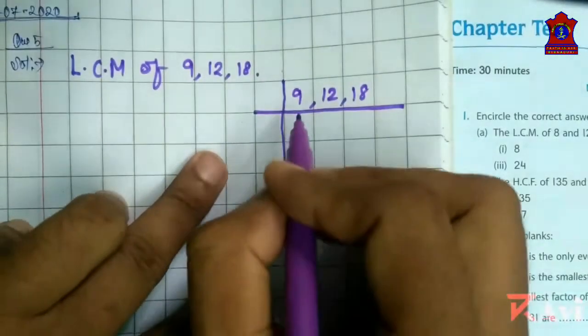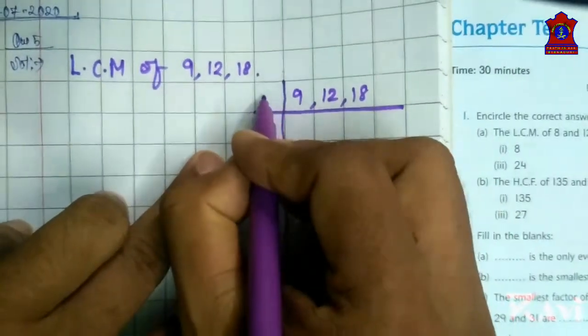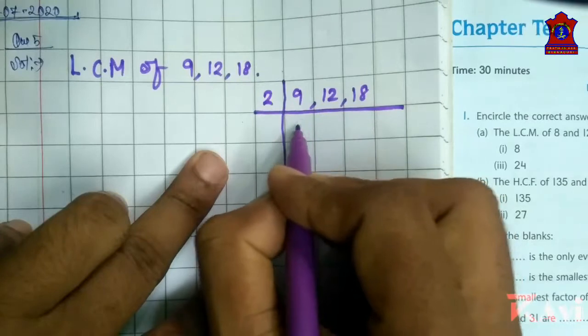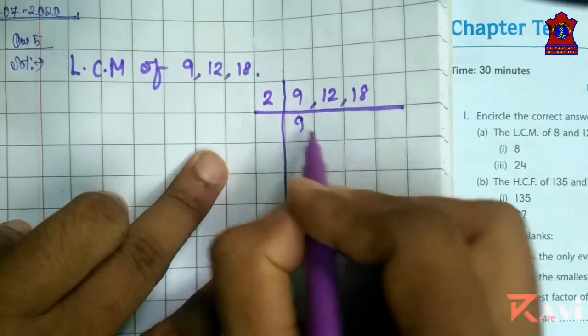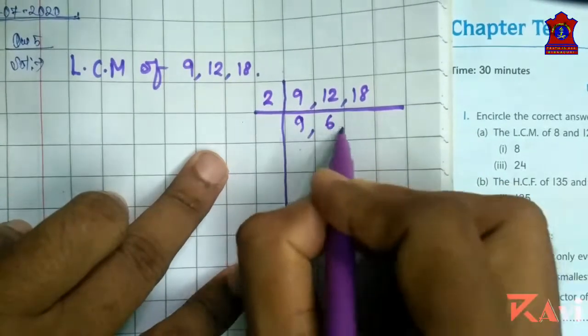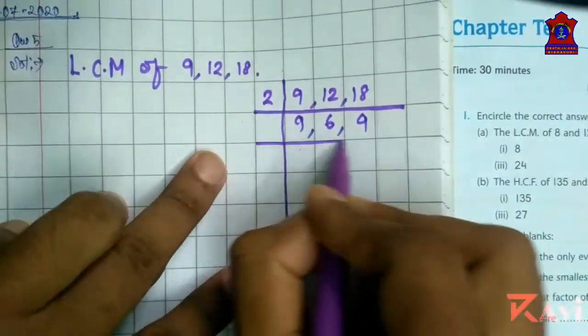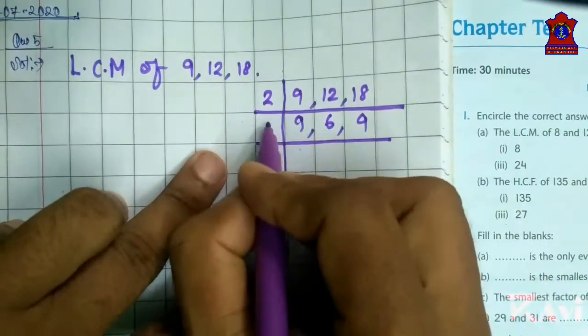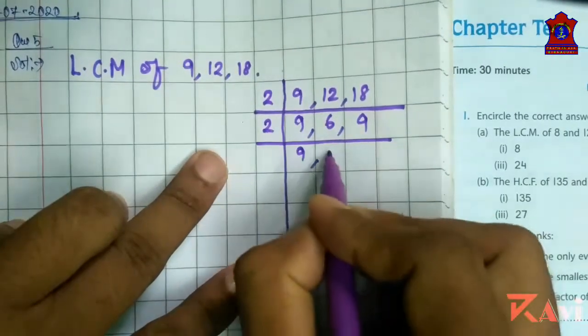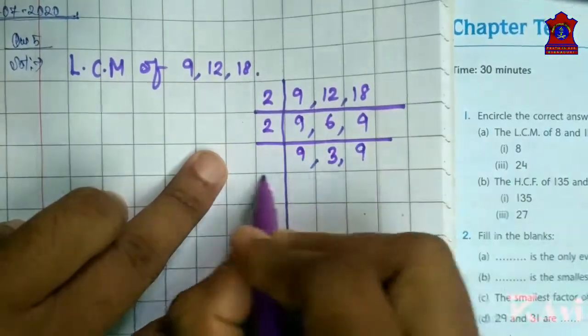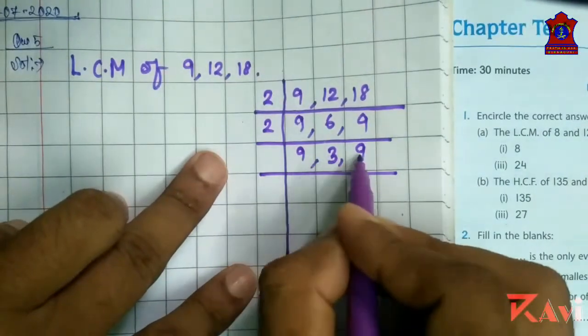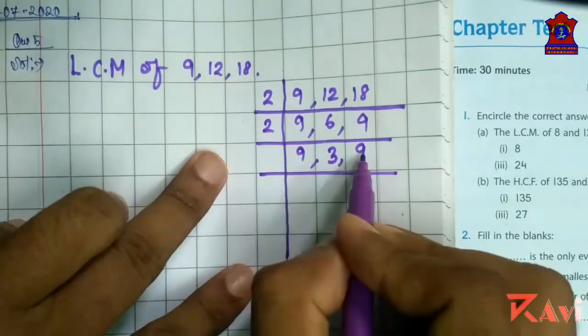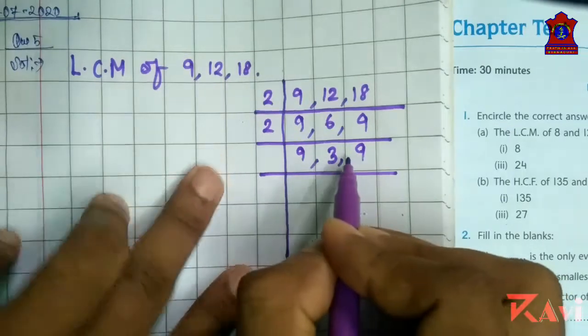Find out the LCM using division method. 9 is not divisible by 2. So write it 9, 2 sixes are 12, 2 nines are 18. Look at these numbers. 6 is again divisible by 2. So take 2. 2 threes are 6. Now look at all these numbers. These are not divisible by 2 as these are odd numbers.